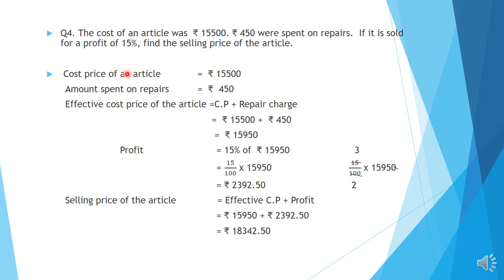Profit is given as 15%. So we find profit on the effective CP: 15% of Rs. 15,950, that is 15 by 100 into 15,950. Simplifying: one zero of 100 cancels with a zero from 15,950, then cutting 15 and 10 by 5 gives 3 over 2. Multiplying 3 into 1595 then dividing by 2 gives Rs. 2392.50.